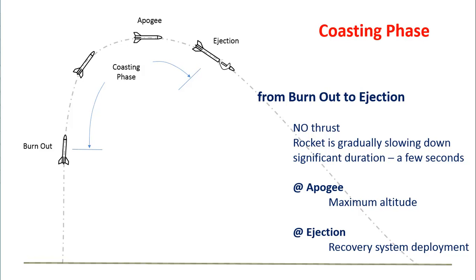So the rocket is going to continue to go up, but it's going to slow down as it goes until it reaches some maximum altitude. And then it will start to fall from there. The coasting phase lasts for several seconds. It has a pretty significant duration.